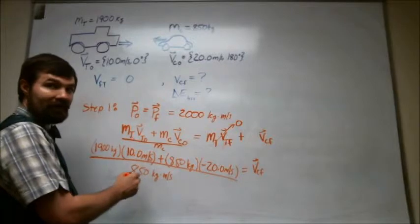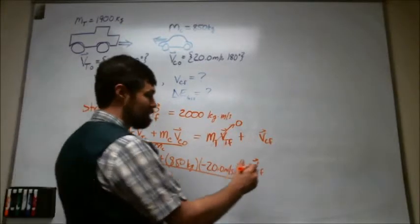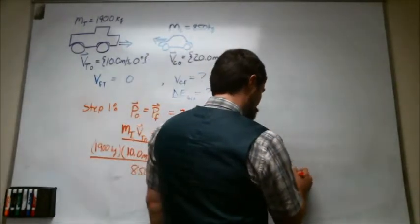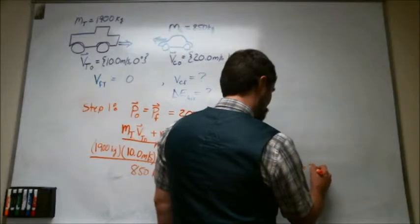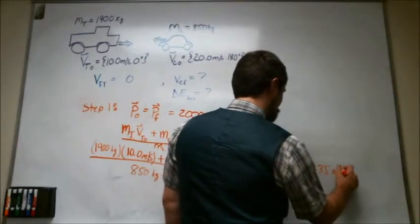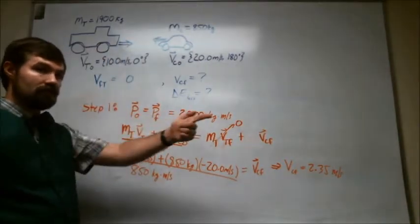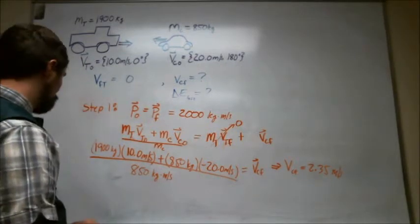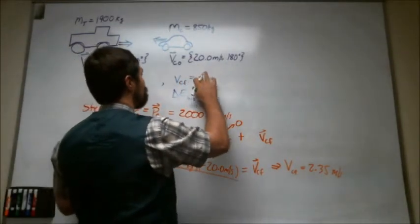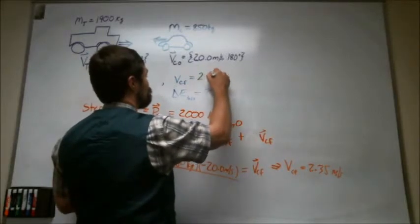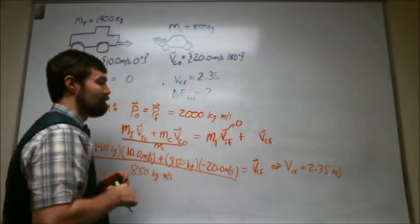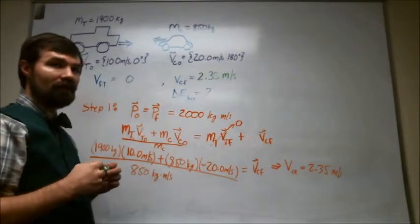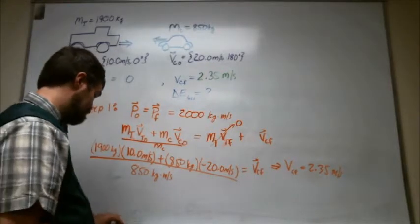So this is 2000 kilogram meters per second. And that's going to be divided by 850 kilograms. So we end up getting that the final speed, which is what we're looking for, is about 2.35 meters per second in the positive direction if you want the velocity. So I'm going to go ahead and write that answer up here, 2.35 meters per second. So step one has been completed at this point.